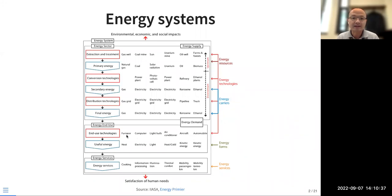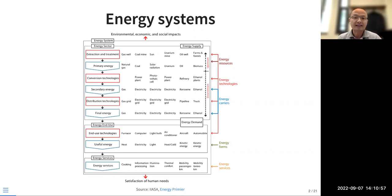Other technologies such as furnaces, computers, and automobiles serve different sectors: industry, building, and transport — the main energy-consuming sectors. End-use technologies convert energy to useful energy: heat, electricity, lighting — the energy services that we really need. From all this conversion there will be energy losses, and that's also why energy efficiency is a key theme of the class.